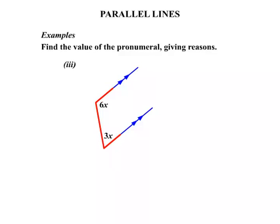We have our C angles. Our co-interior angles. So as a result, by adding them 6x plus 3x we should get 180 degrees. They are supplementary. And the reason is co-interior angles, parallel lines.